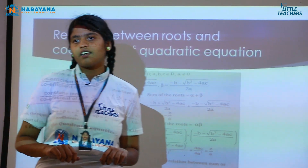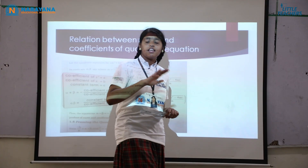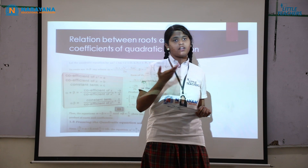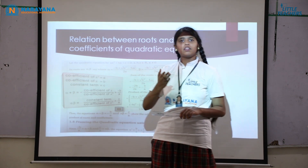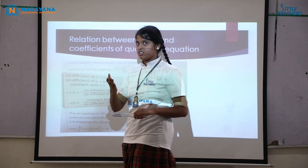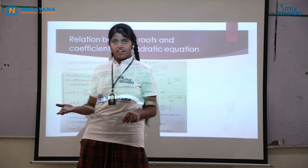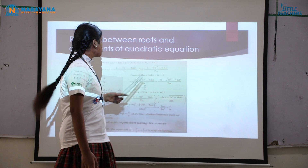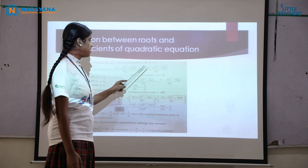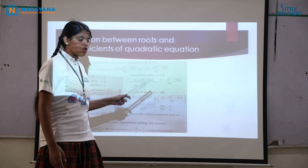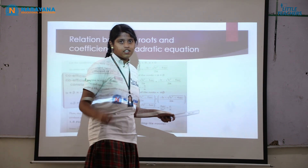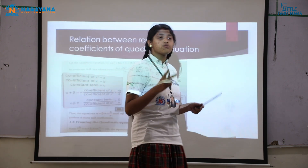Why do we say A is not equal to 0? Because if A equals 0, then 0 into x² becomes 0, and we will be left over with Bx + C, which is not a quadratic equation. So they say A is not equal to 0. A quadratic equation has degree 2, so we will have two roots.